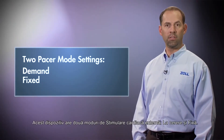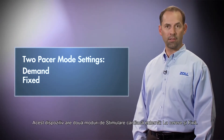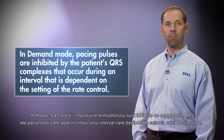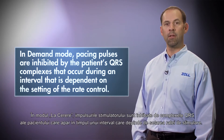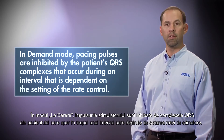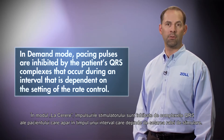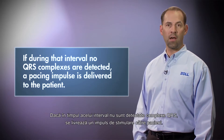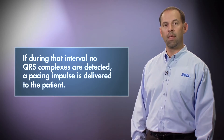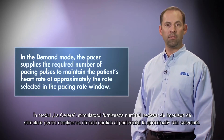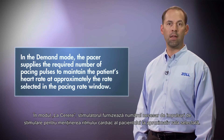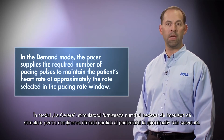This device has two pacer mode settings: demand and fixed. The factory default mode setting is demand. In demand mode, pacing pulses are inhibited by the patient's QRS complexes that occur during an interval dependent on the setting of the rate control. If during that interval no QRS complexes are detected, a pacing impulse is delivered to the patient. The pacer supplies the required number of pacing pulses to maintain the patient's heart rate at approximately the rate selected in the pacing rate window.